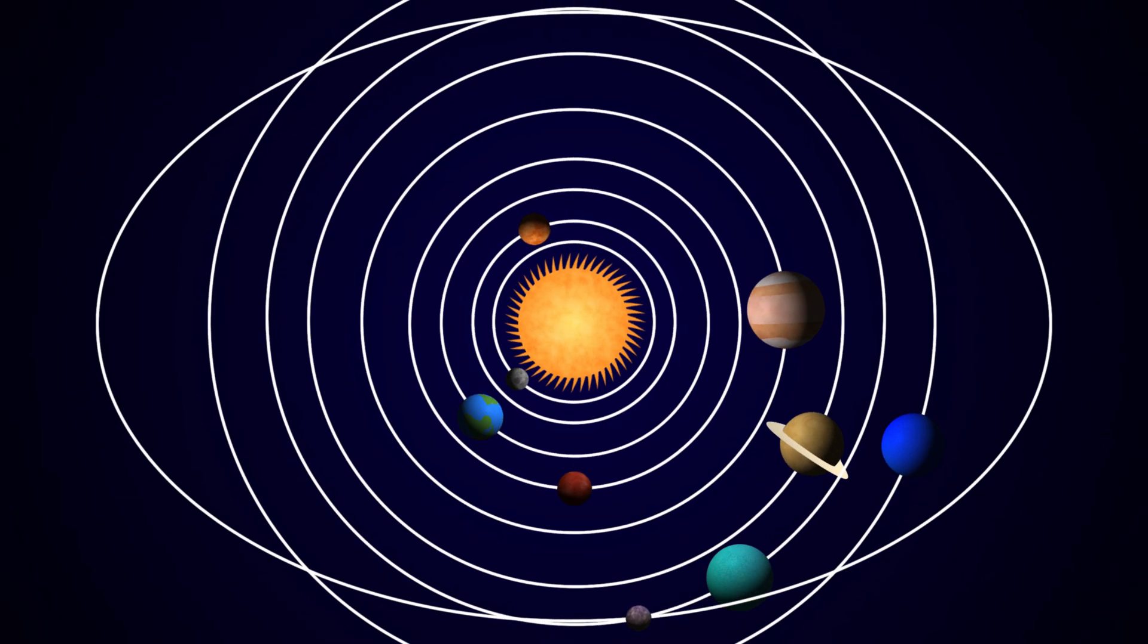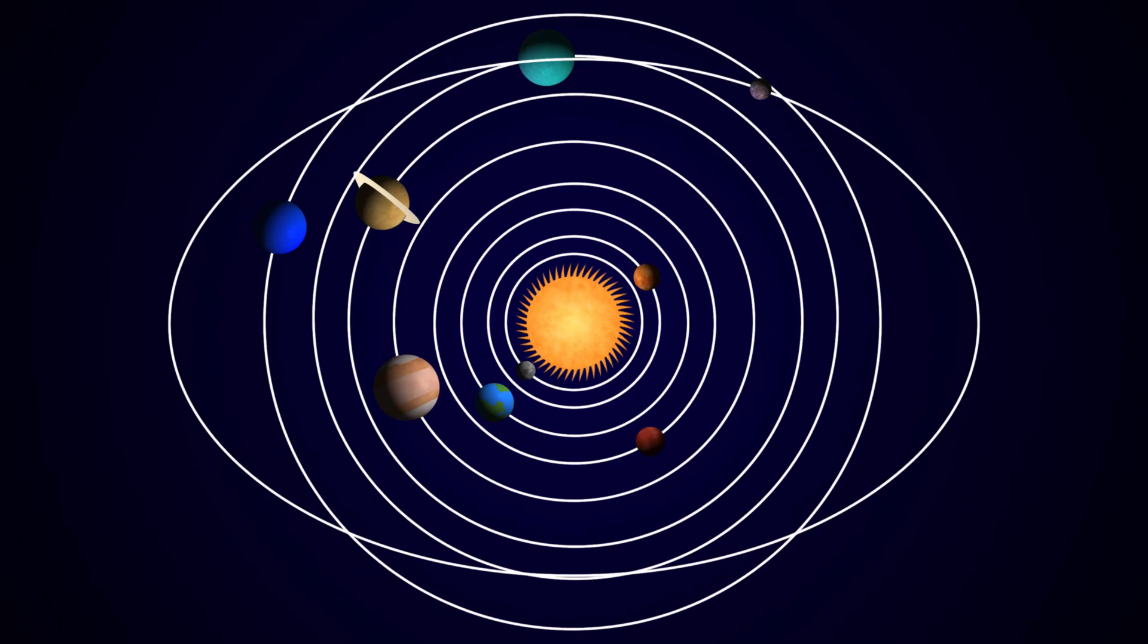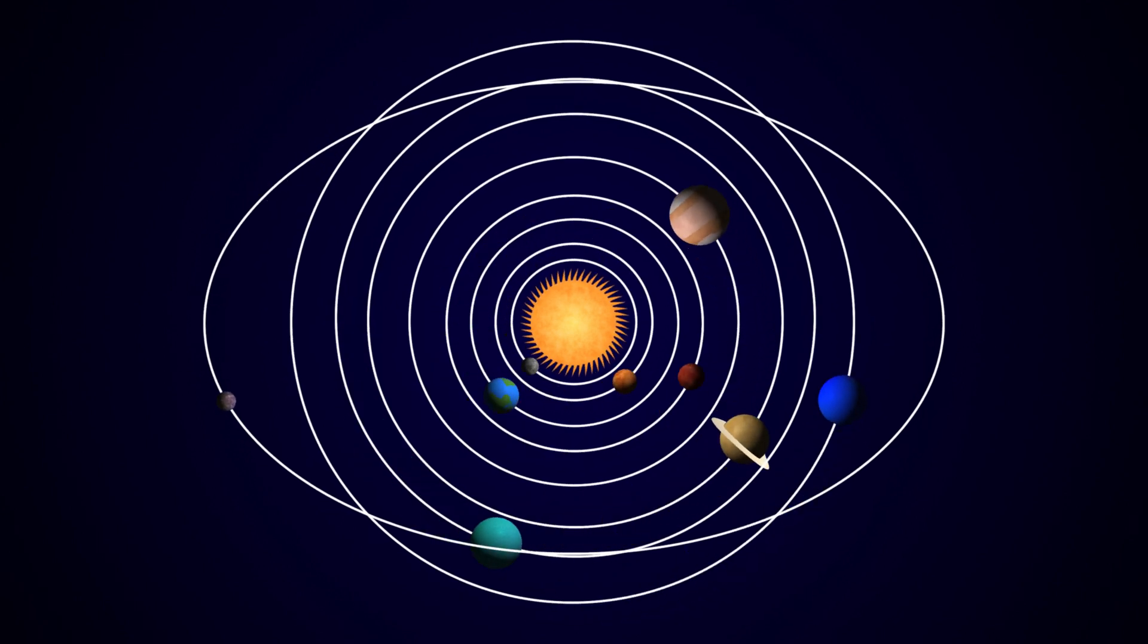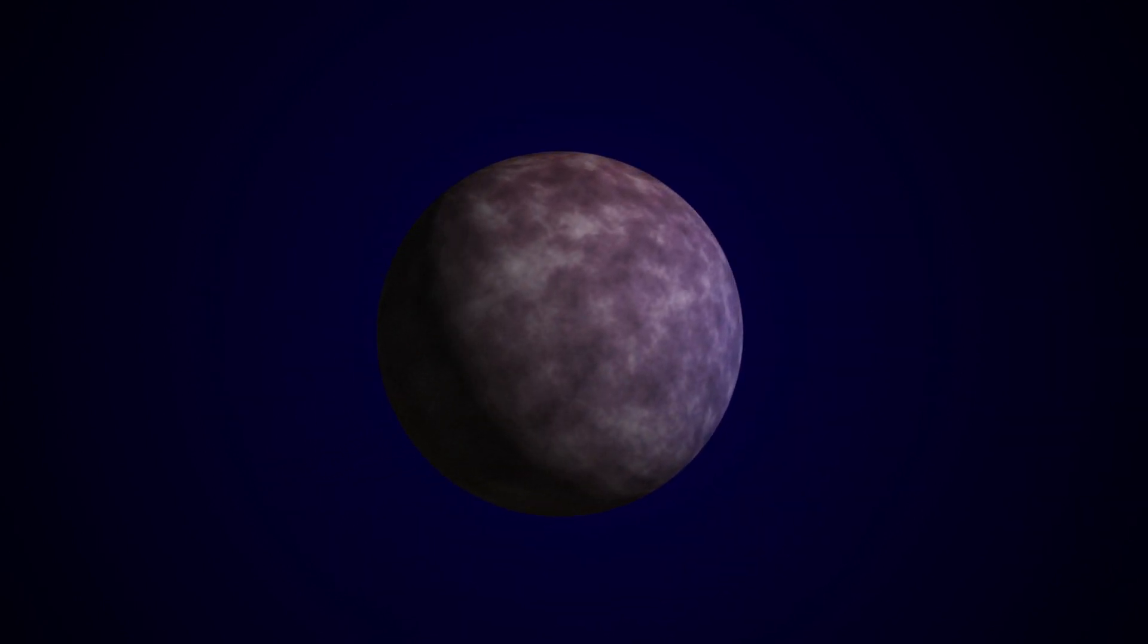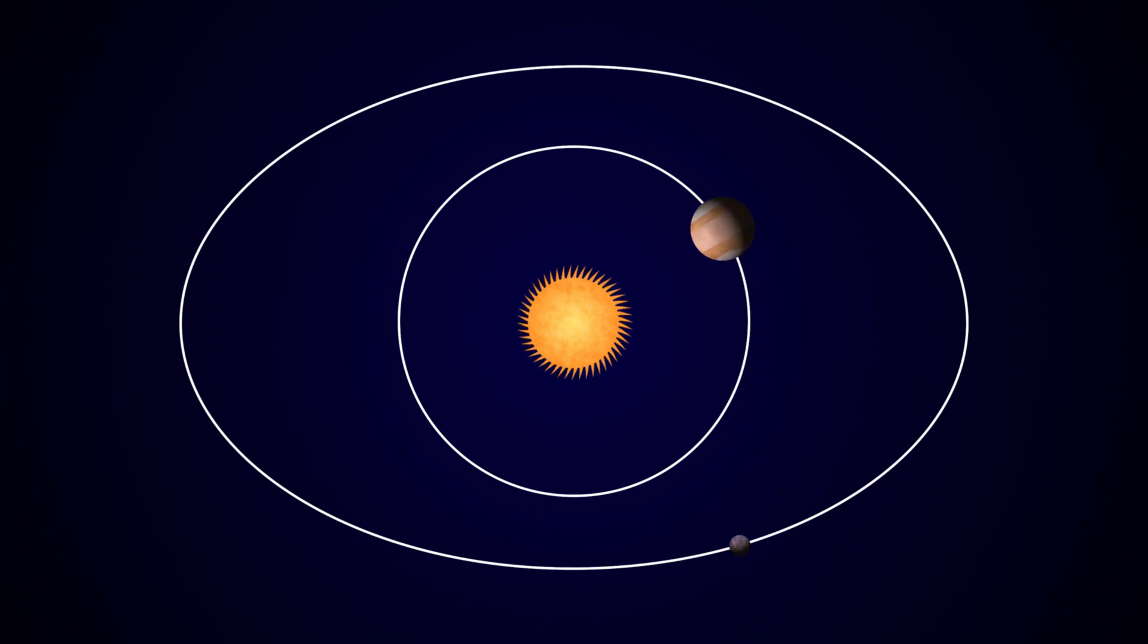Although its trajectory is a bit odd compared to the other planets, Pluto does orbit around the sun. It is also a sphere. The third requirement, however, is where Pluto fails.